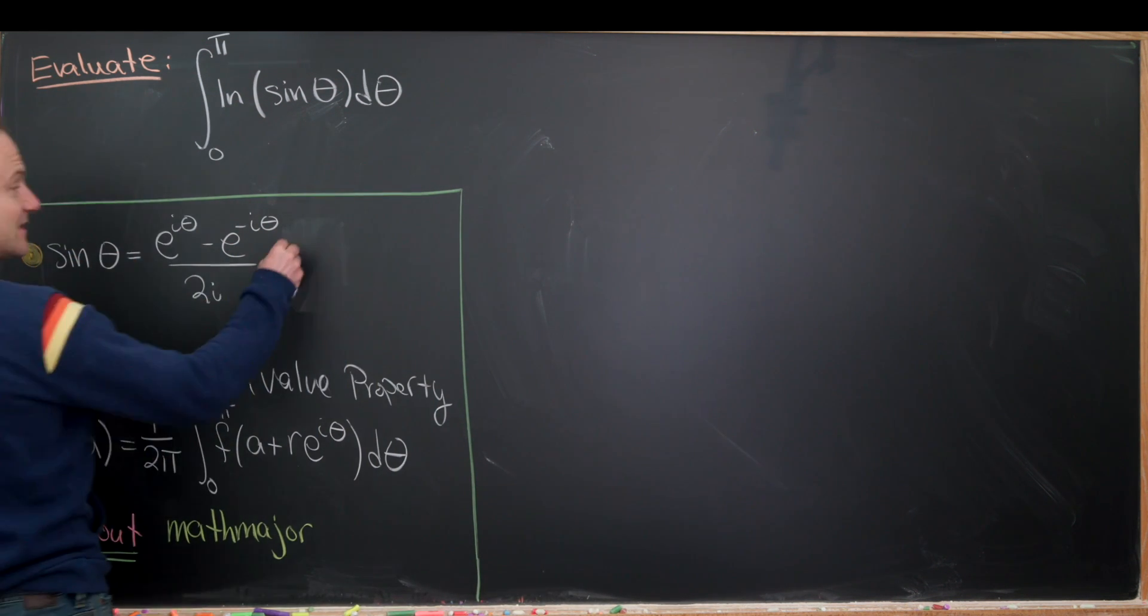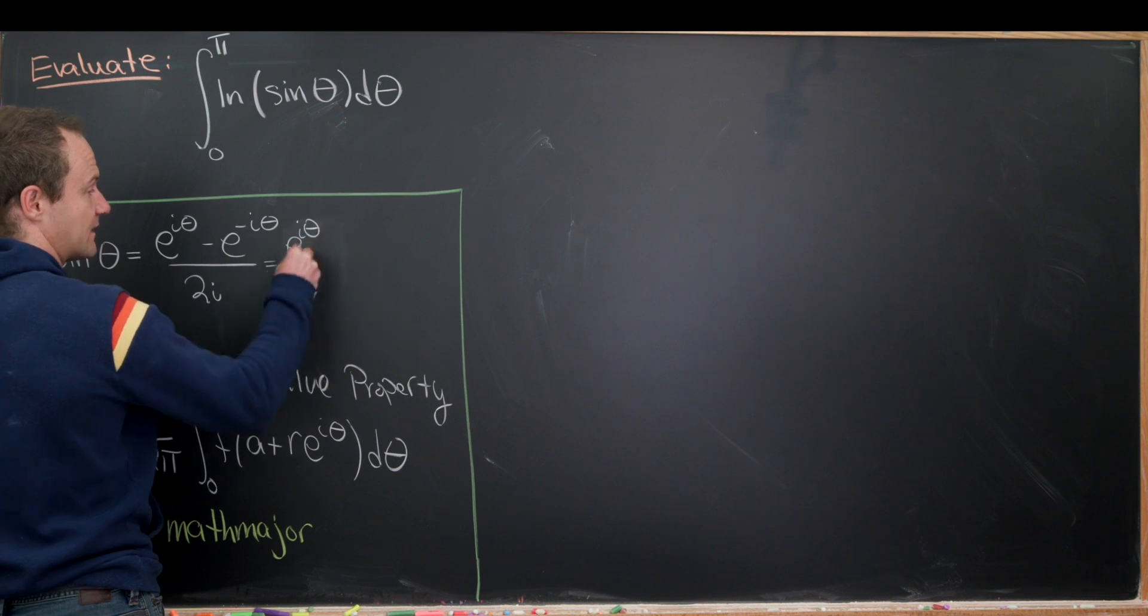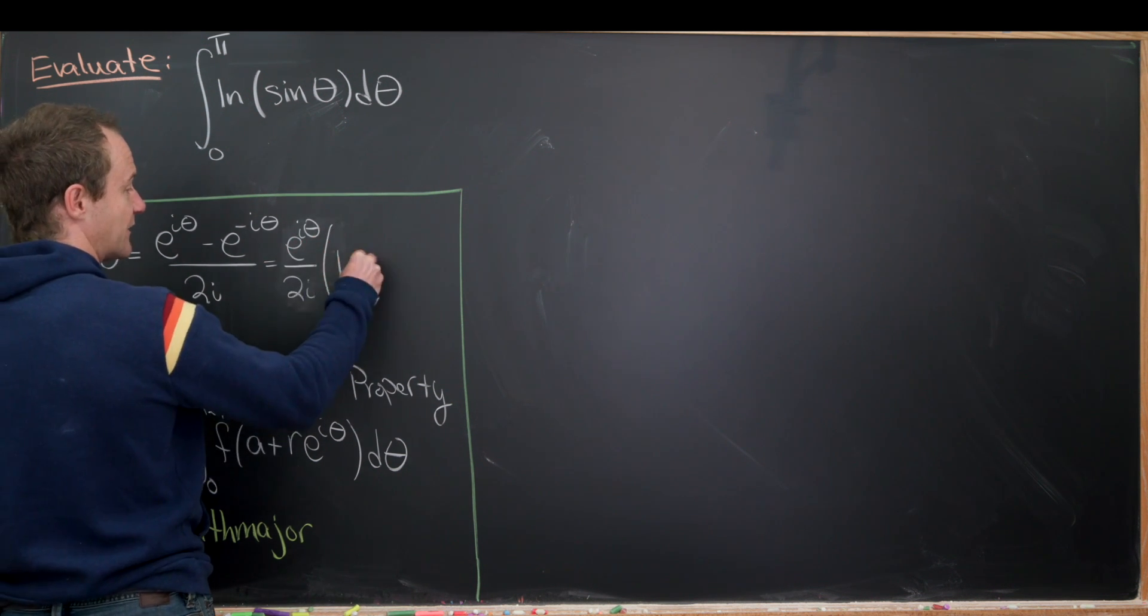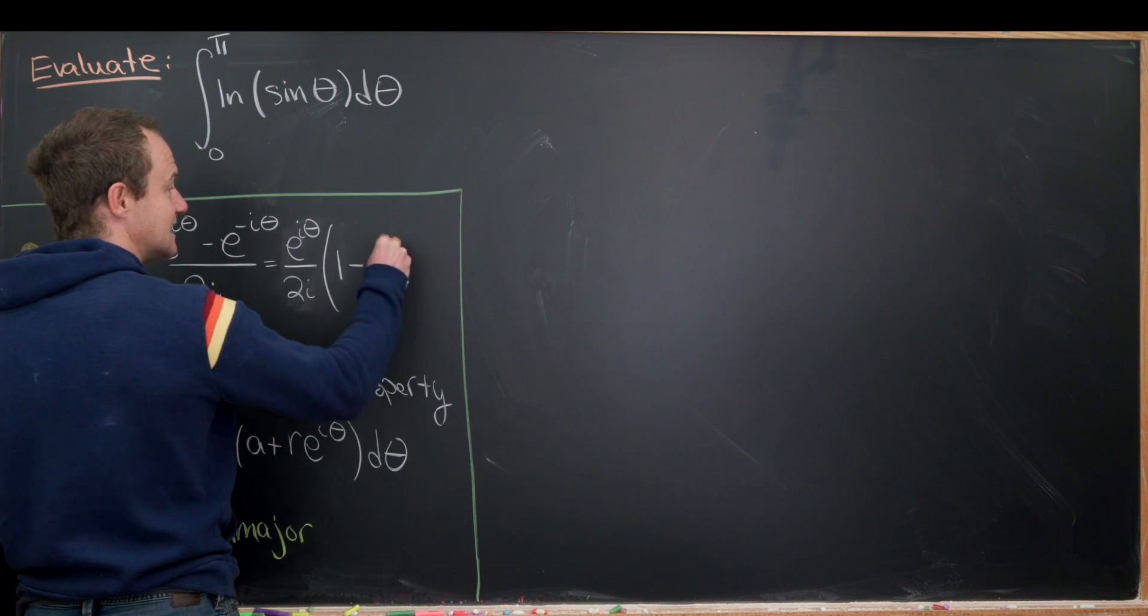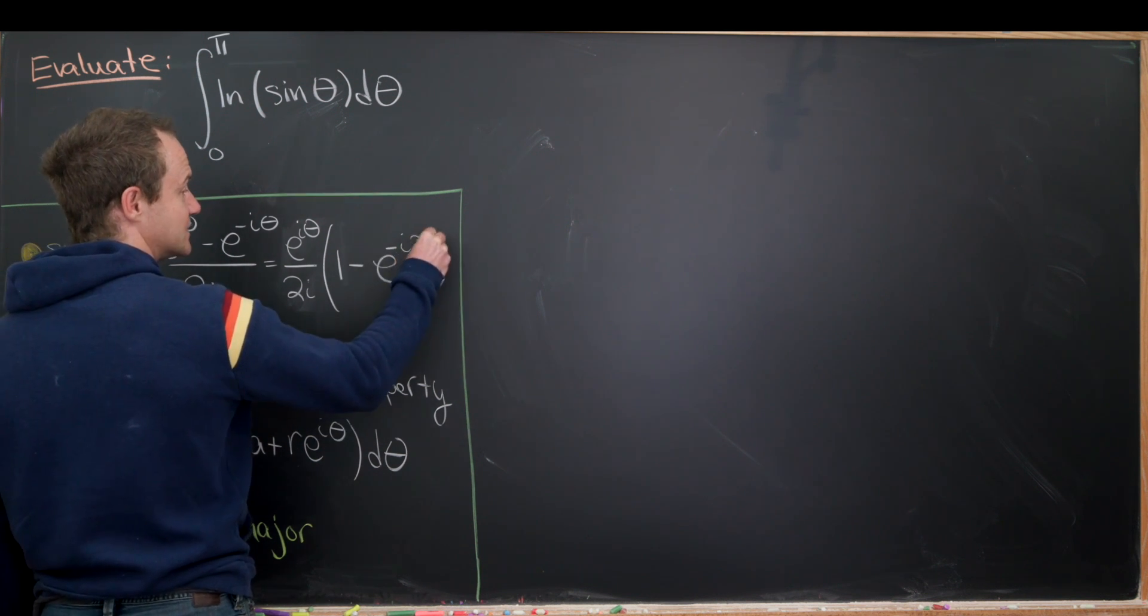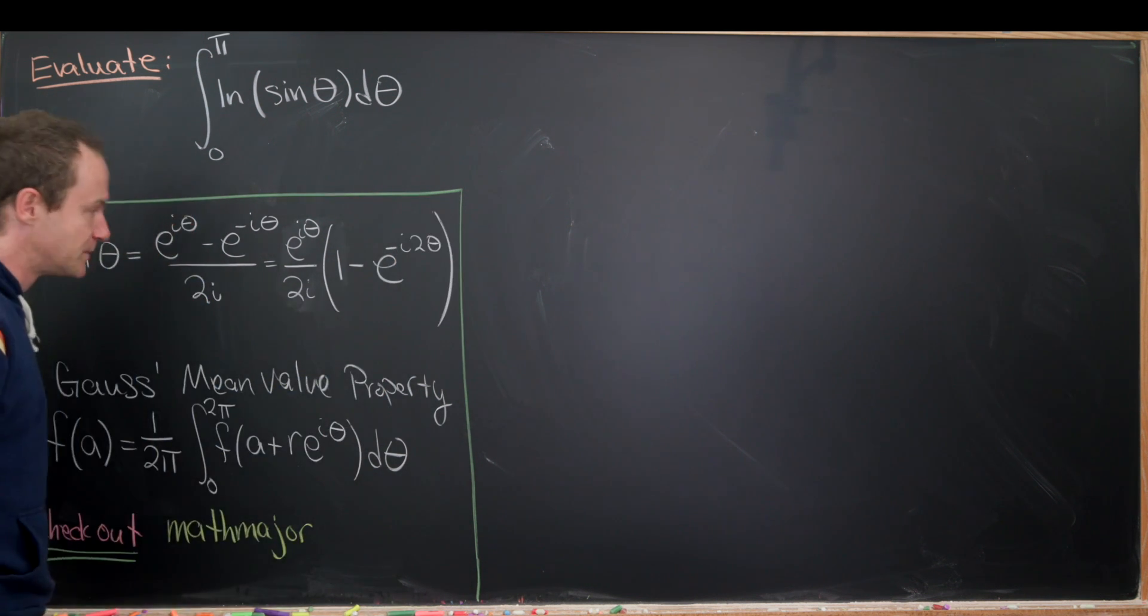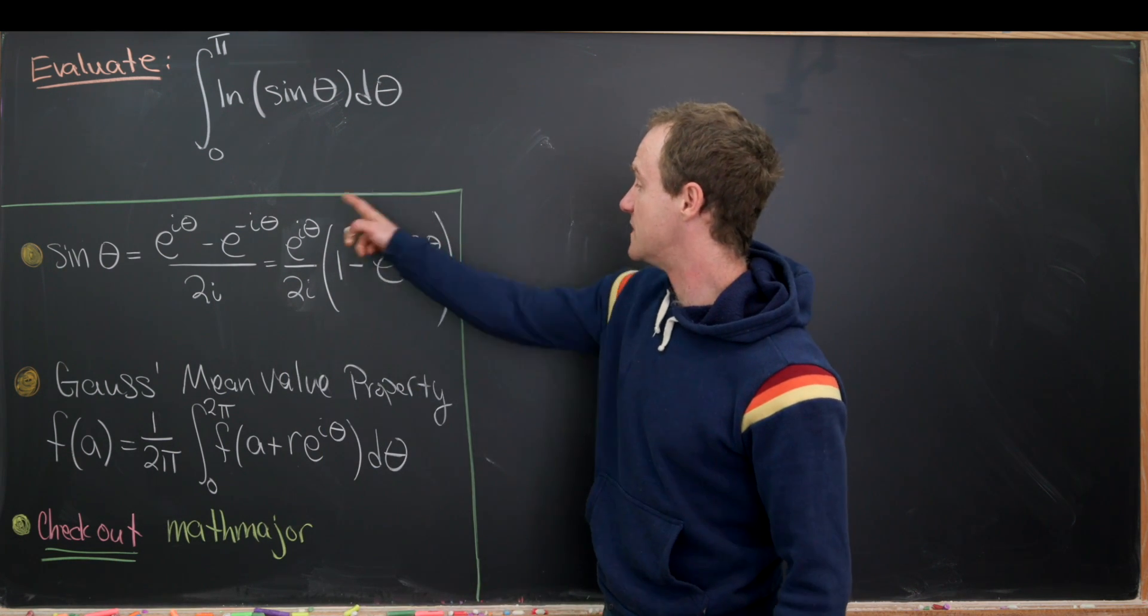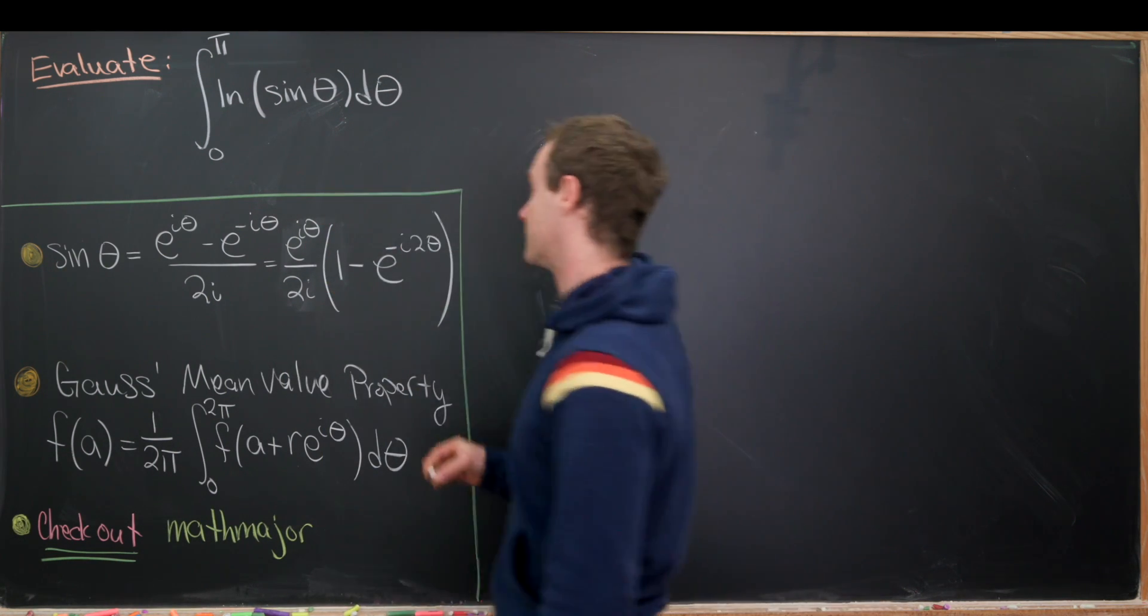So I'll factor e to the i theta out of this whole thing. So that'll leave me with e to the i theta over 2i. And then I'll be left with 1 minus e to the minus i times 2 theta. Okay, so that's good. And that's where I'm going to start this. I'll put this thing in for the sine function.